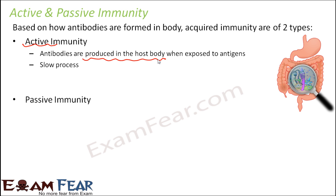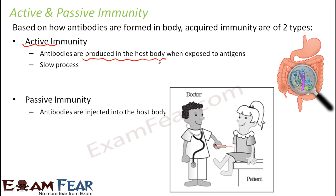Now let us see what is passive immunity. In this case, the antibodies are not produced in the body. Rather, ready-made antibodies are injected into the host body. Some antibodies from outside are being injected into the body — these antibodies are against some specific antigen. This process is a relatively fast process because you directly introduce those antibodies inside the body, so immediately the antibodies will start performing their job and fighting against the antigens.